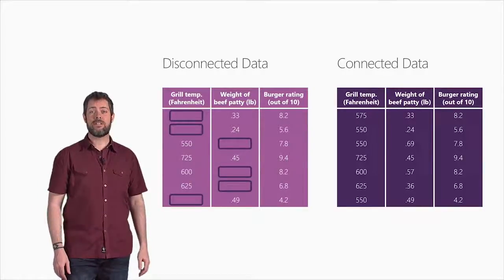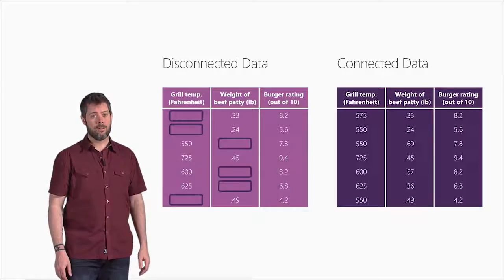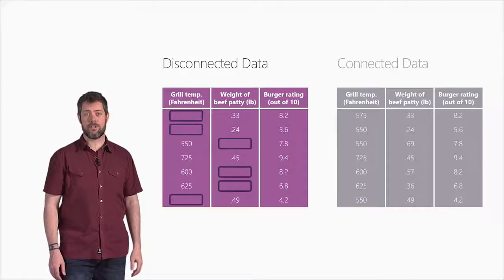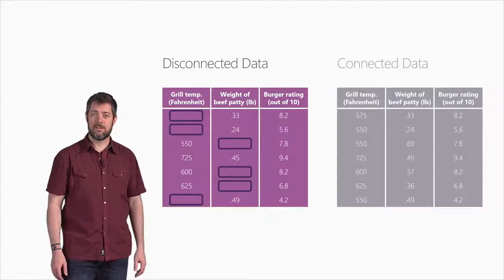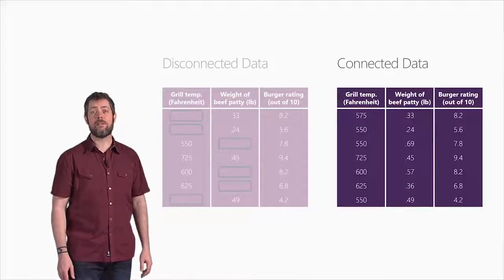But if there's too much missing, your data starts to look like Swiss cheese. Looking at the table on the left, there's so much missing data, it's hard to come up with any kind of relationship between grill temperature and patty weight. This is an example of disconnected data. The table on the right though is full and complete. A great example of connected data.